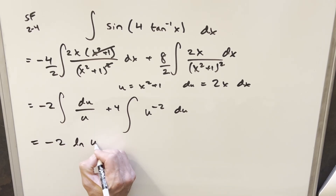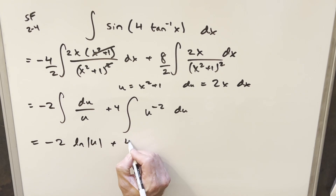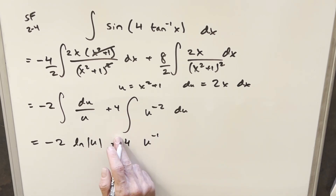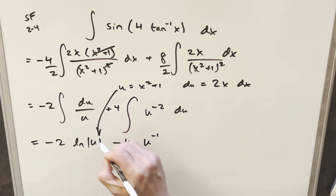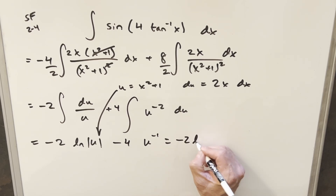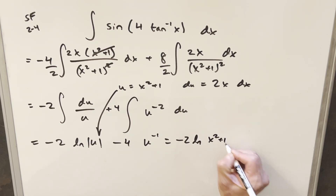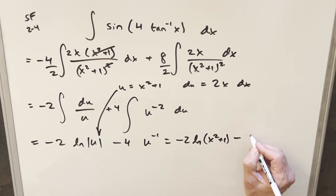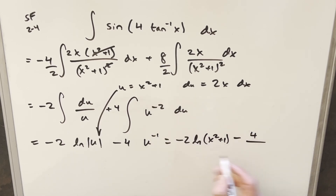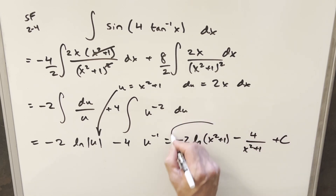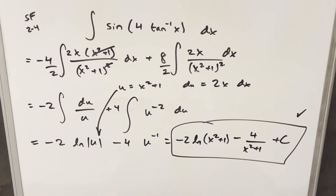Integrating, we get −2·ln|u| + 4·(u^(−1)) with a minus sign brought to front, giving minus. Back-substituting u = x²+1, the final answer is: −2·ln(x²+1) − 4/(x²+1) + C. We can drop the absolute value since x²+1 is always positive. And that's it — thanks for watching, have a great day!